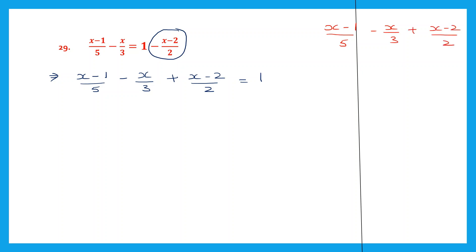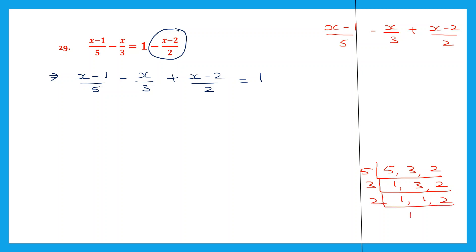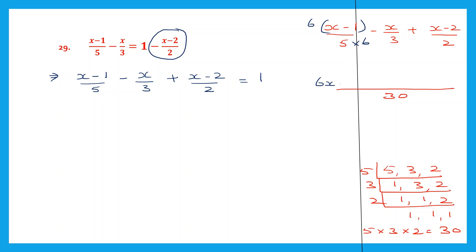So now we have 5, 3 and 2. Let's find the LCM of 5, 3 and 2. So the LCM is 5 into 3 into 2. 5 3s are 15, 15 2s are 30. So the LCM here is 30. Now let's find the new numerators. 5 6s are 30, so we multiply this by 6. 6 into x is 6x, 6 into minus 1 is minus 6. Now let's go on to the next one. 3 into 10 is 30, so x into 10: since the sign is minus, minus x into 10 is minus 10x. Now 2 into 15 is 30, so we multiply this by 15.